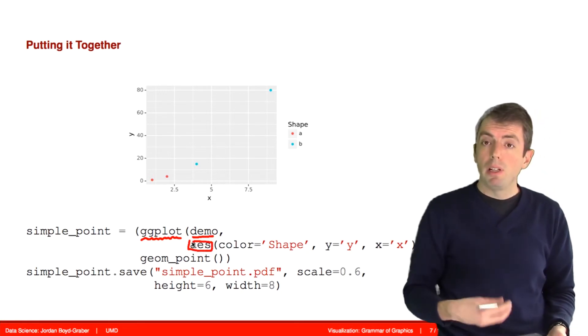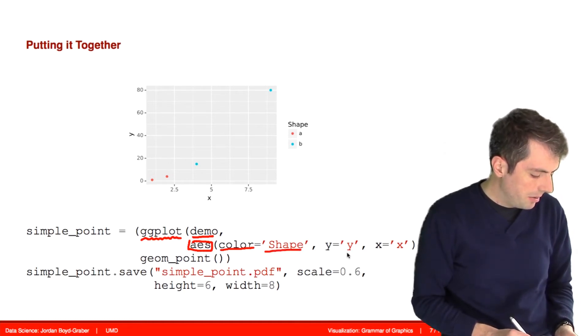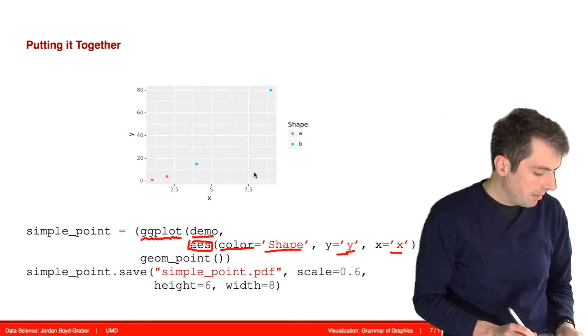Here we're going to say plot these points and choose a color based on the shape. Then use y as the y-coordinate and x as the x-coordinate. These get plotted here.